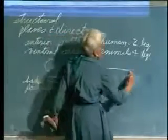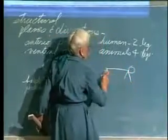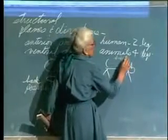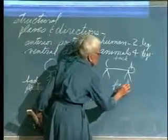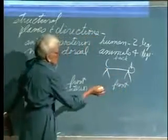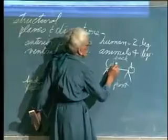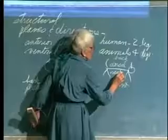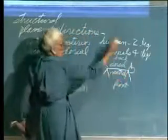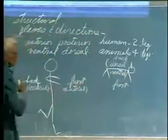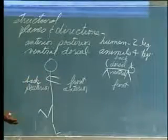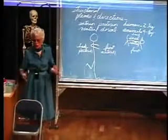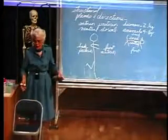If we take the little animal down here on four legs, this is back and this is front. But the early anatomists called this dorsal and this ventral. Of course, if the animal stands up, then it will be like anterior/posterior. So in today's world with the human, we use both dorsal, ventral, anterior, and posterior.